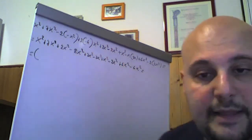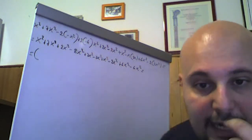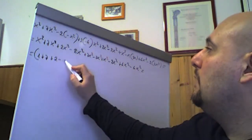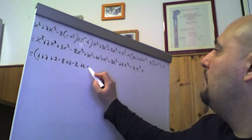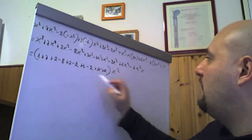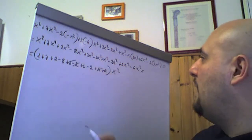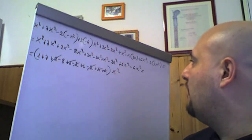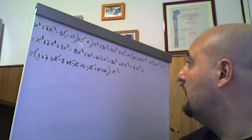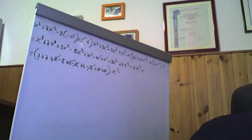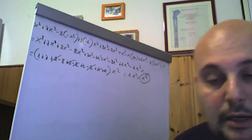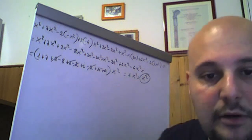Conviene mettere tutti i coefficienti con parte letterale x². Abbiamo: 1 + 7 + 2 − 8 + 2 − 2 + 1 − 2 + 4 − 4. Si semplificano: 4 − 4 = 0, 2 − 2 = 0, ancora 2 − 2 = 0. Rimane 1 + 1 = 2, più 7 fa 9, meno 8 fa 1. Il risultato finale è 1·x² = x², un monomio di secondo grado con coefficiente 1.